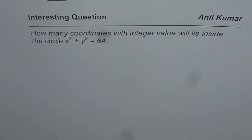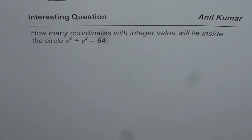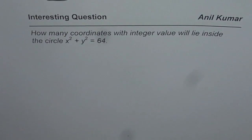I am Anil Kumar sharing with you a very interesting question which combines different aspects of coordinate geometry. The question is: how many coordinates with integer values will lie inside the circle x² + y² = 64? Inside means not on the circle but in the interior of the circle.